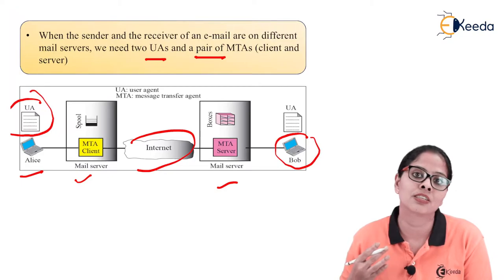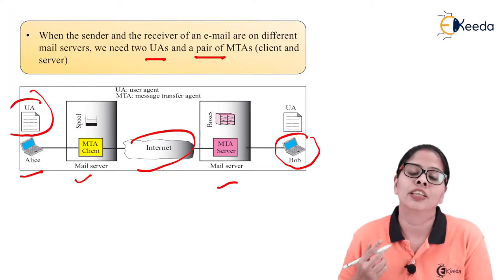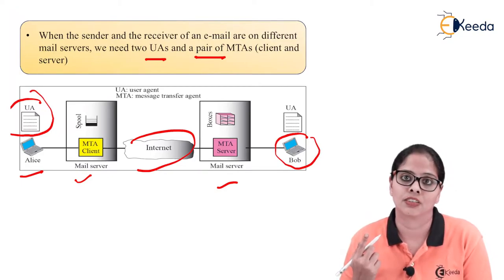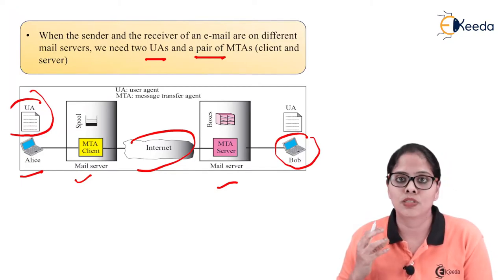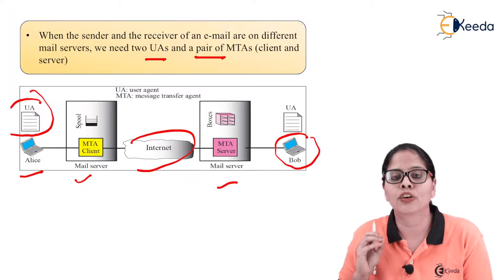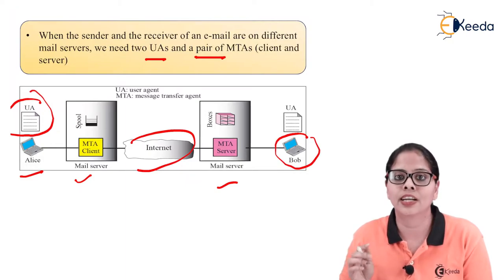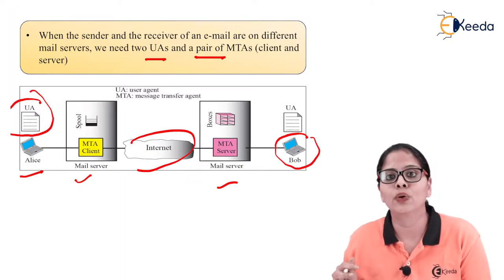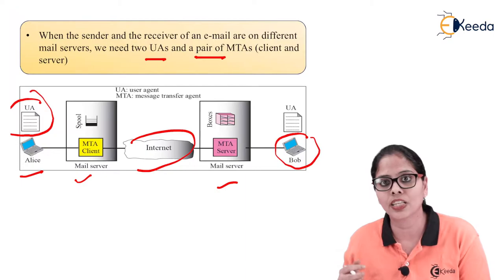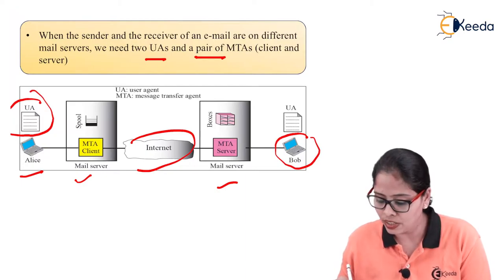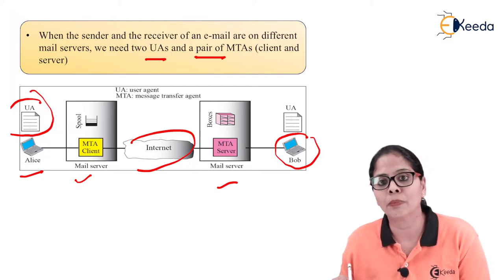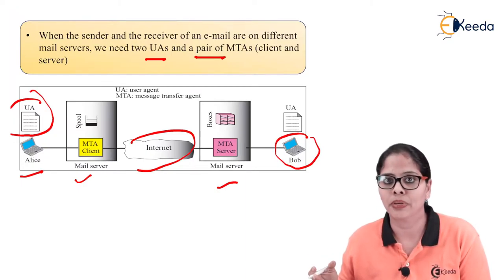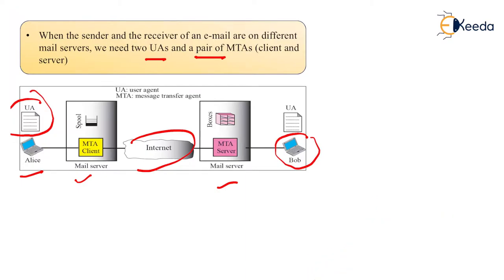In the previous condition, there was only a single server. Here, for pushing the data you need the MTA client, and for receiving the data you need another MTA server on the other mail server.